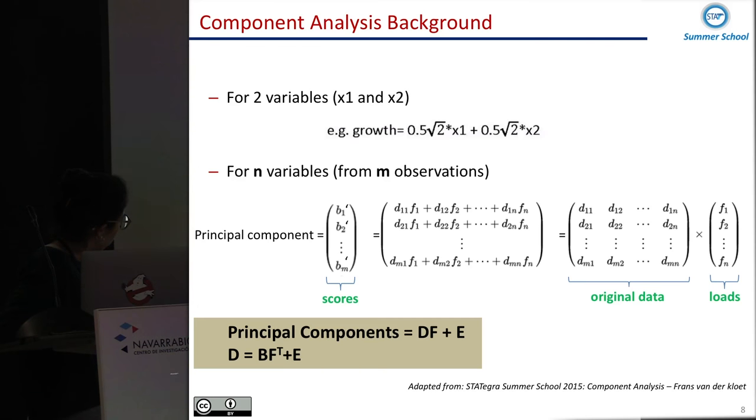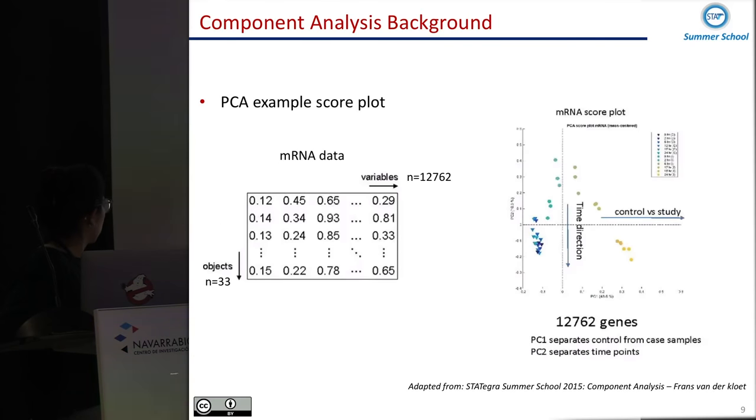Or define the data as the matrix for the vector of the scores, the principal components multiplied by the transformation of the loadings and some error. So basically what we can get from this data, this is an example of mRNA data summarizes the data in two components. And basically the first component is explaining the difference between controls and cases and the second the ethical time.